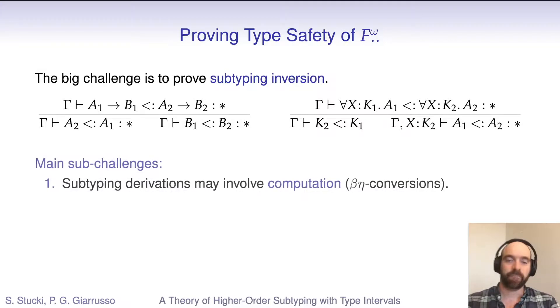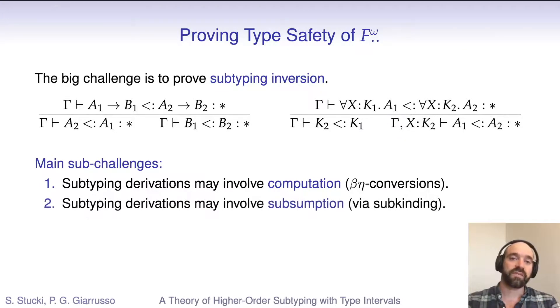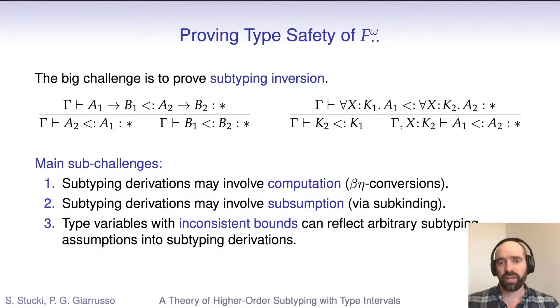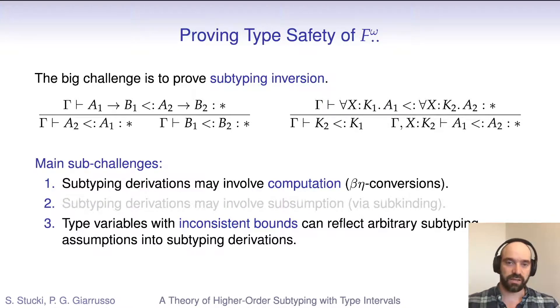The proof of subtyping inversion in F-omega-int is complicated by the fact that we have type-level computation, but also dependent kinding. One of the main challenges when inverting subtyping in a system with type computation is that in the middle of a subtyping derivation, we may encounter a beta reduction or an eta expansion. Because our system has subkinding, there's a similar problem with subsumption, which can also appear anywhere in a subtyping derivation and does block simple structural inversion. And finally, we actually have a form of subtyping reflection in F-omega-int, and this will destroy all the nice structural properties of the subtyping judgment. I won't go into the details of the second challenge in this presentation, but let's have a look at challenge number one and three a little bit closer.